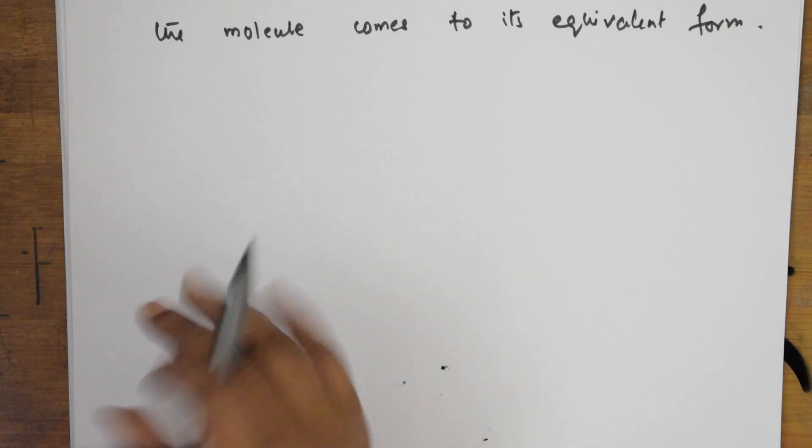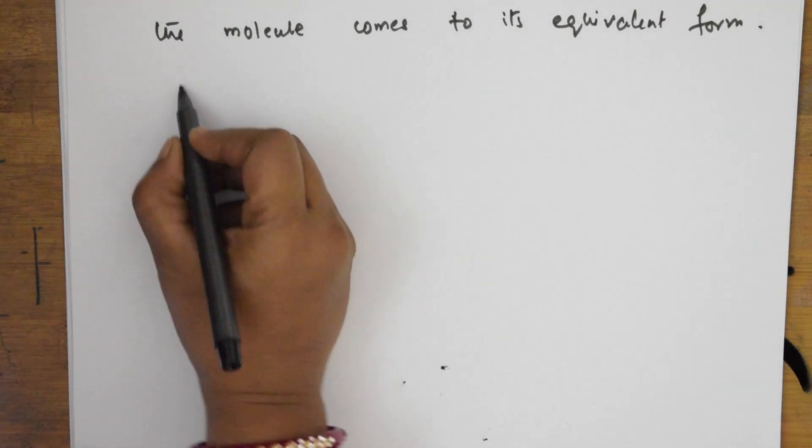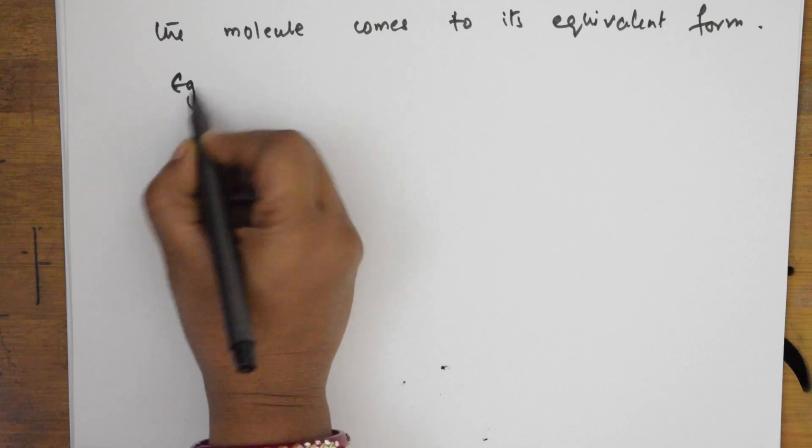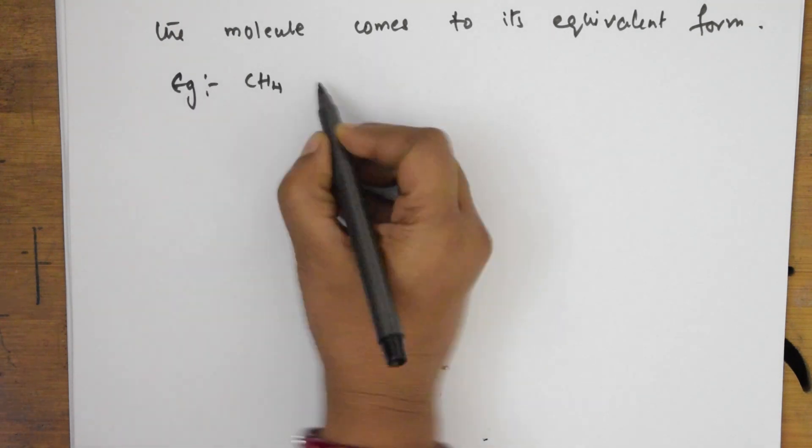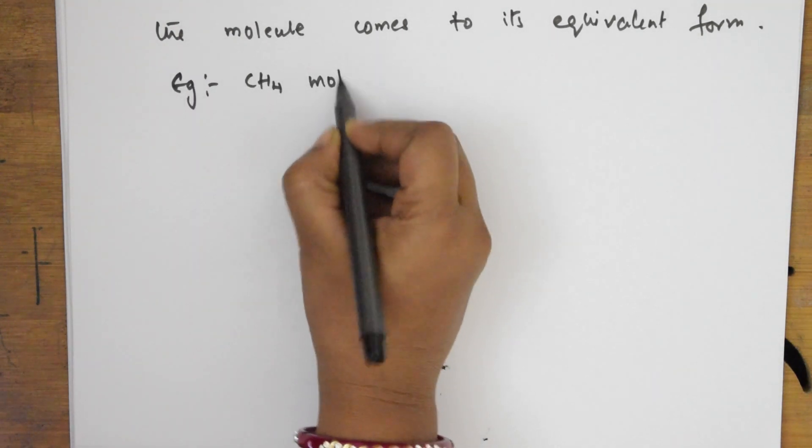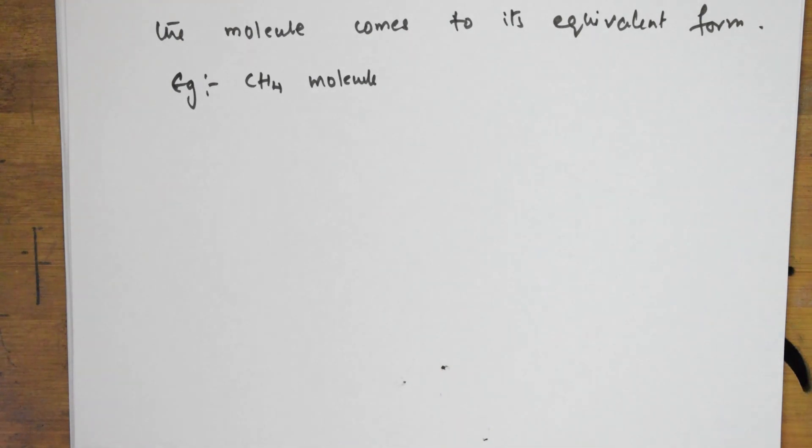Now let us see the alternate axis of symmetry for a methane molecule with an example. I am going to take the example of a methane molecule and draw it to understand what is meant by alternate axis of symmetry.